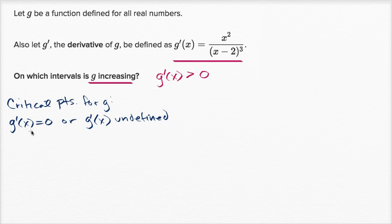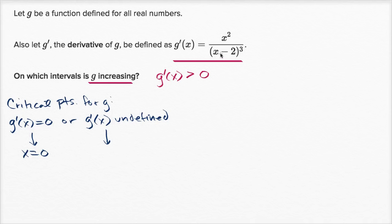When is g prime of x equal to zero? The numerator must be zero, so x squared equals zero, meaning x equals zero — that's the only place where g prime equals zero. Where is g prime undefined? The denominator becomes zero when x minus two equals zero, so x equals two. We have two critical points: x equals zero and x equals two.